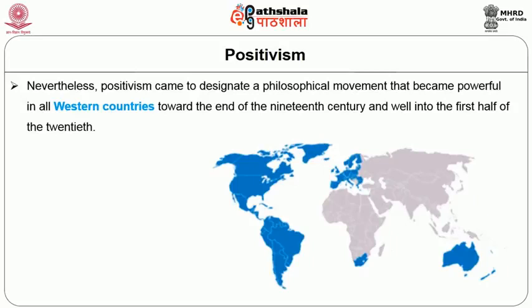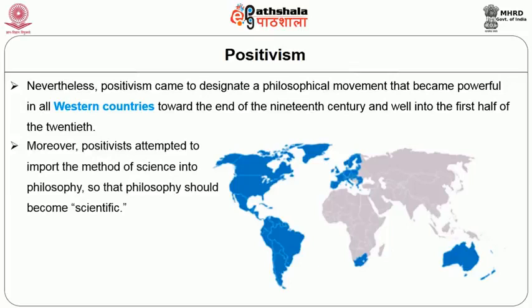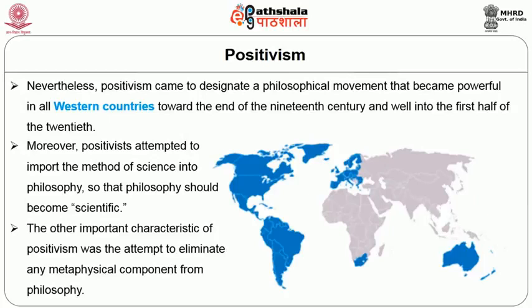Nevertheless, Positivism came to be designated a philosophical movement that became powerful in all Western countries towards the end of the 19th century and well into the first half of the 20th century. Moreover, positivists attempted to import the method of science into philosophy so that philosophy should become scientific. The other important characteristic of Positivism was the attempt to eliminate any metaphysical component from philosophy.